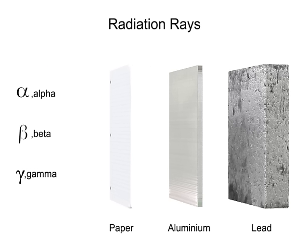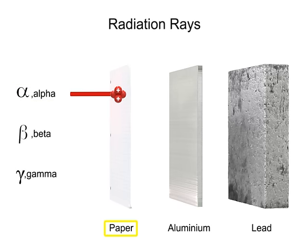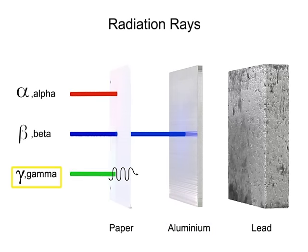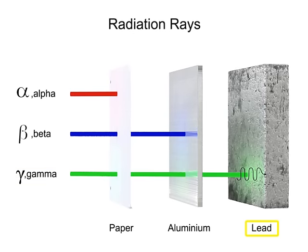The unique characteristics of these three types of radiation affect their capacity to penetrate various materials. Whereas an alpha particle is stopped by a sheet of paper, a beta particle easily passes through paper but is stopped by aluminum. A gamma ray is not impeded by the paper nor aluminum, but its progress can be stopped by lead.